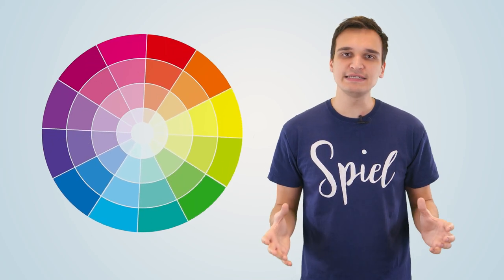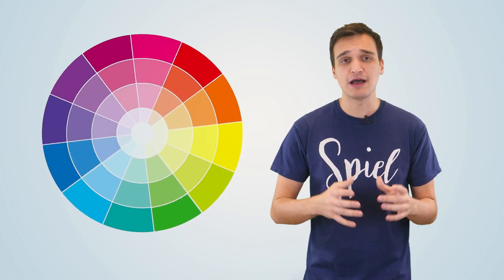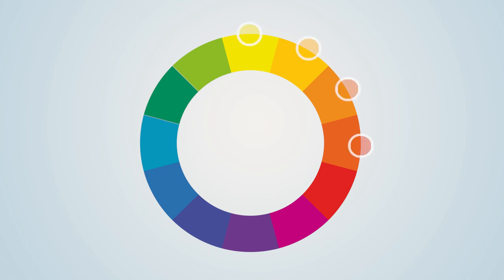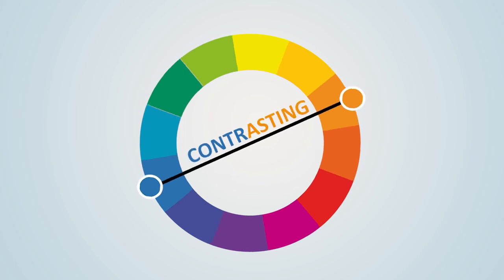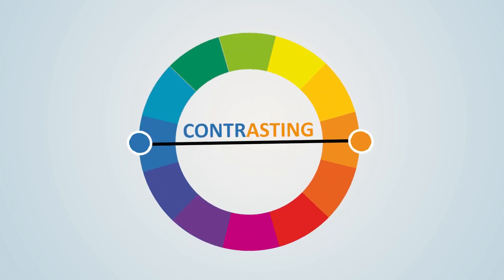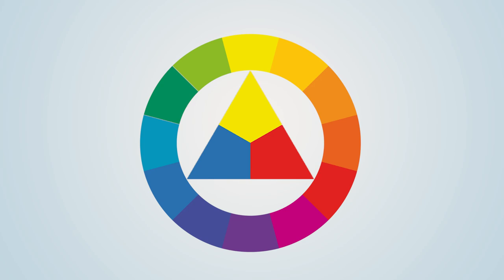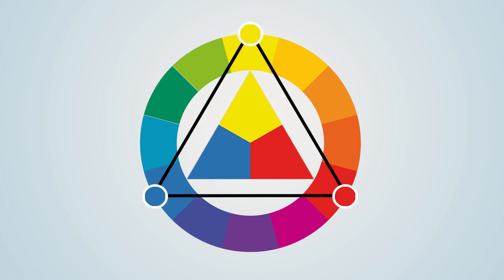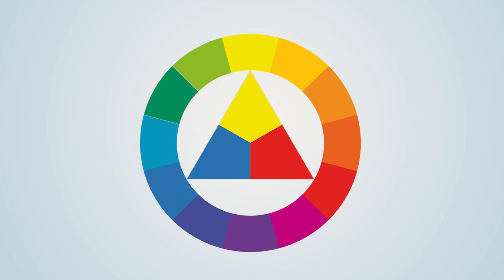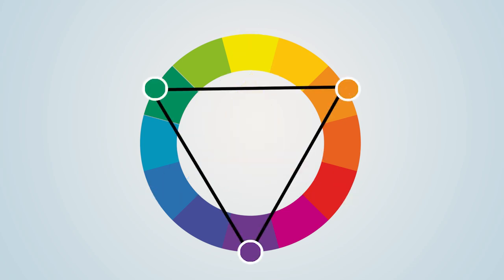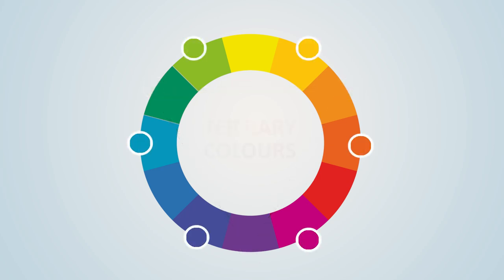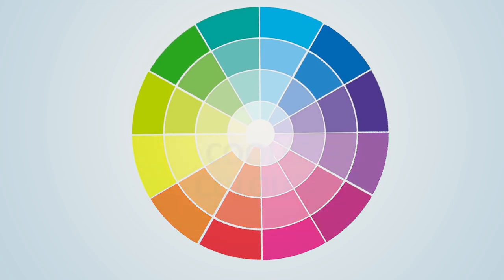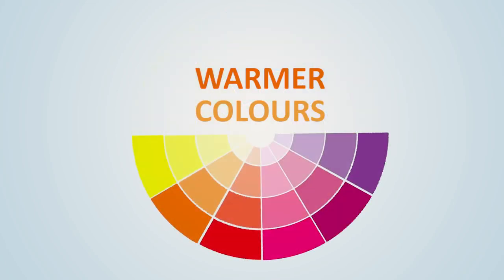The color wheel is basically a visual representation of how different colors relate to each other, with the colors closest to each other on the color wheel being most analogous and those further away from each other being most contrasting. We can see the three primary colors — red, yellow, and blue — appear in a triangular relationship on the color wheel, and so do the three secondary colors: orange, green, and violet. Everything remaining on the wheel are tertiary colors. We can also see that half of the wheel includes the cooler colors, and the other half the warmer colors.